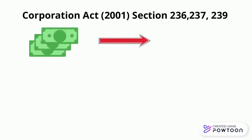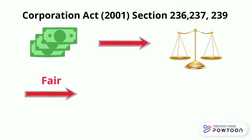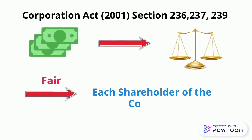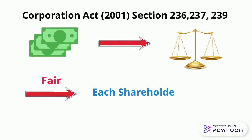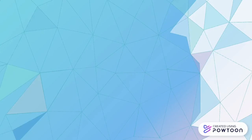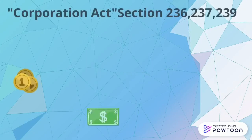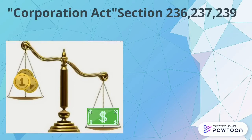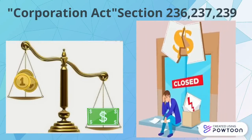Under Sections 236, 237, and 239, the company's assets are in the hands of shareholders, and all profits and debts incurred by the company should be distributed to all shareholders. George and Peter may violate this act through improper practice, which could be unfair if debts are incurred in the company. This may lead to debts and potentially the company's bankruptcy, as the company may be declared bankrupt due to misuse of funds.